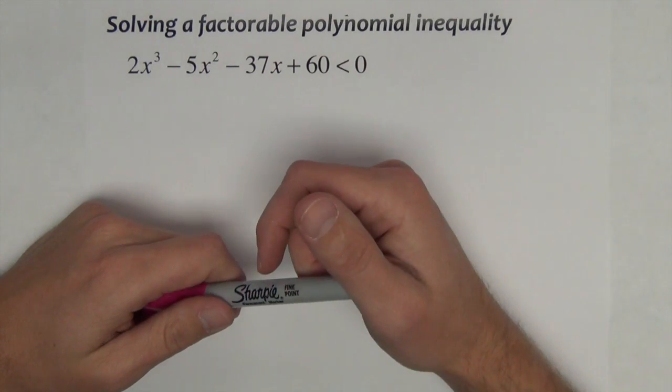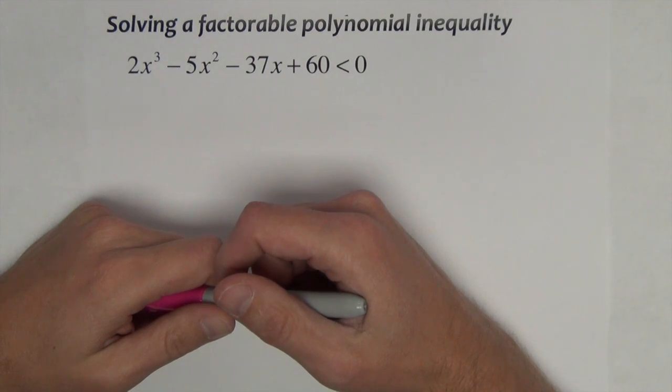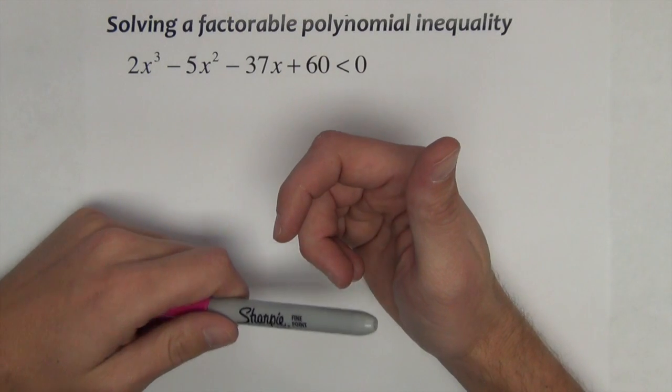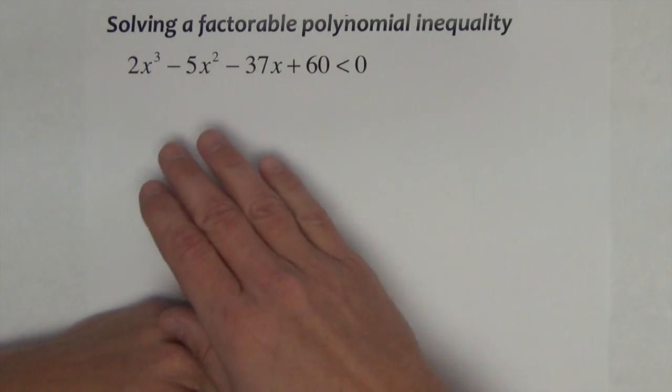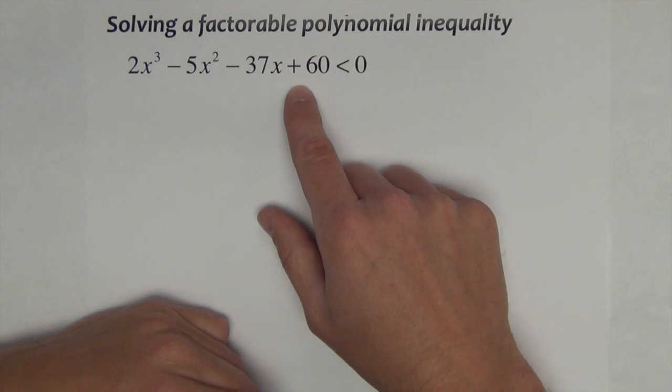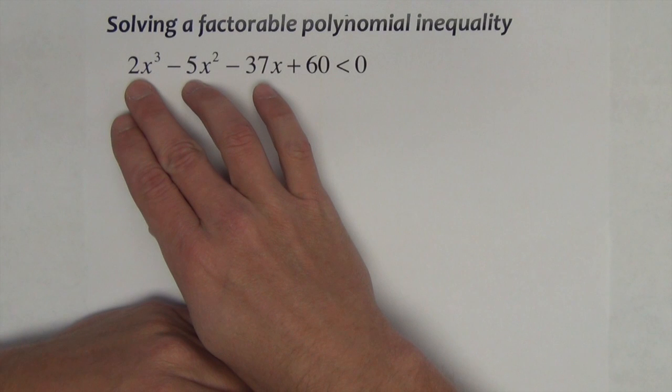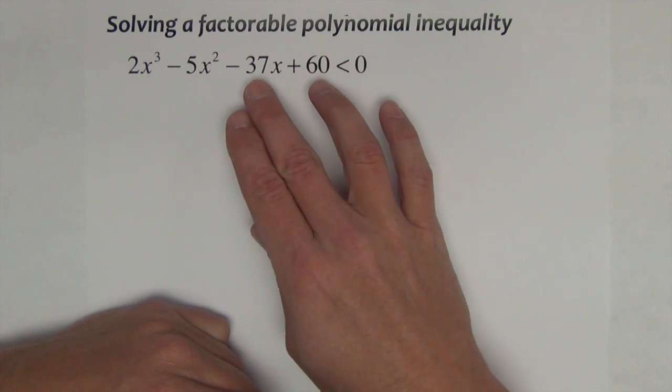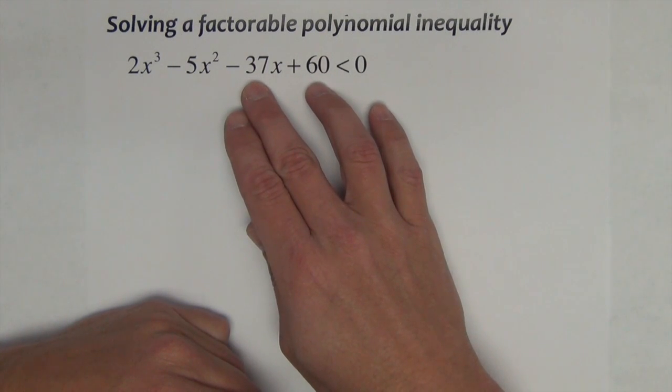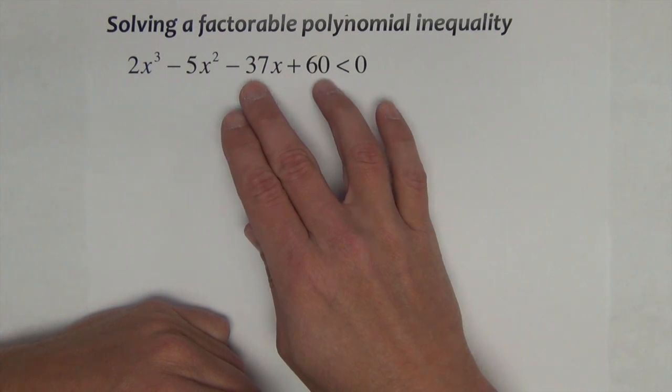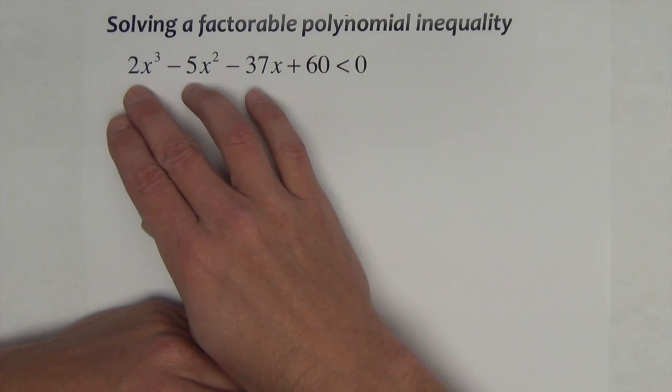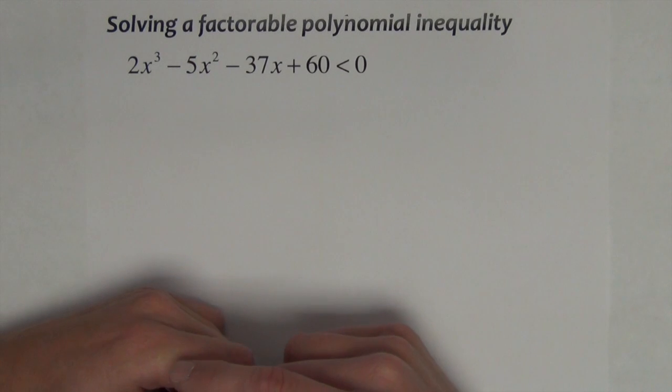In this first example, we're going to look at how to solve a factorable polynomial inequality. The first thing I do when I check for factoring - I notice this particular problem has four terms, and four terms sometimes lend themselves to a grouping technique. However, looking at the coefficients, there's not a way I can use grouping. So instead, I'm going to use the rational zeros theorem.